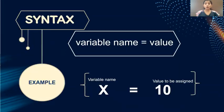Now syntax for naming a variable is first write the variable name followed by the equal to sign and the value which you would like to assign to your variable. Here I have taken example variable as x and I'm assigning value 10 to x. This is the syntax of how you will have to name a variable.